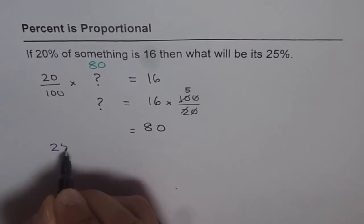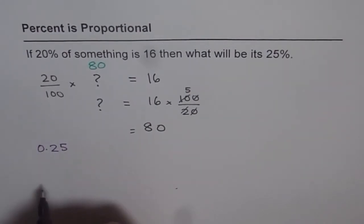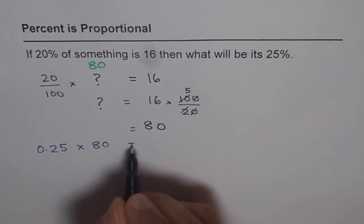So, 25%, we can write 25% as 0.25 also, of means times, 80 is what? So, that becomes the question.